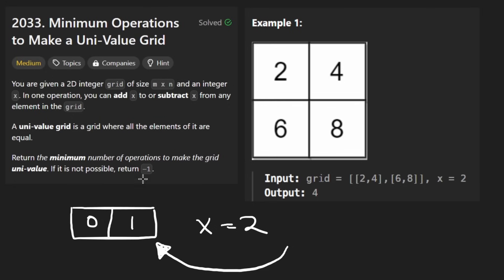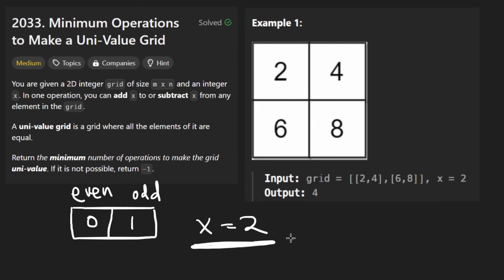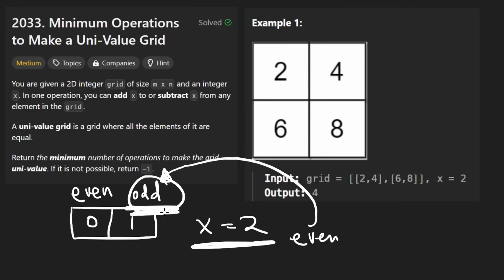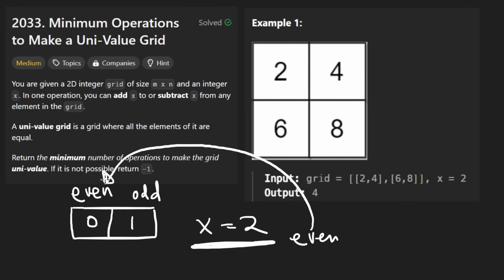In this example, we have one even number and one odd number, and x is even. If you take an even number and keep adding it to an odd number, it stays odd no matter how many times you do it. Similarly, subtracting an even from an odd keeps it odd. An even plus or minus an even stays even. So these can never be made equal.